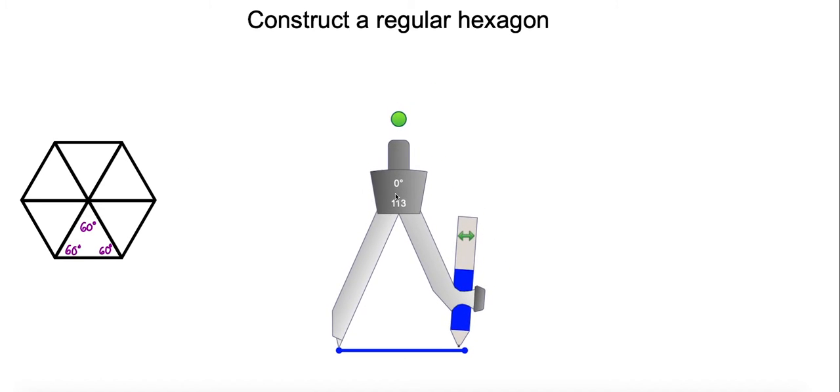We're starting off here with a regular line segment. When you do this construction, make sure that when you set the length of the compass, you do not change it at all until you're finished.